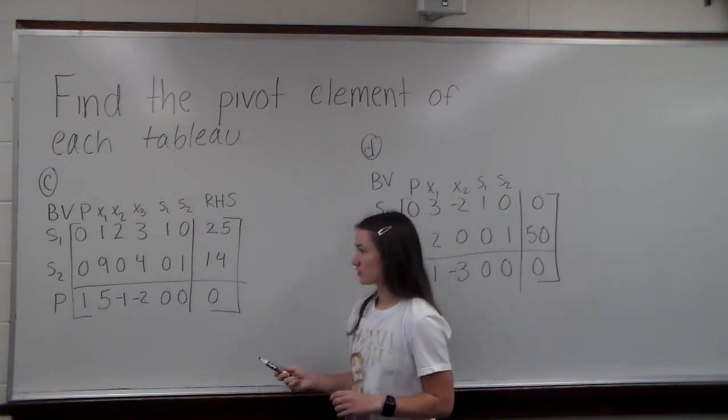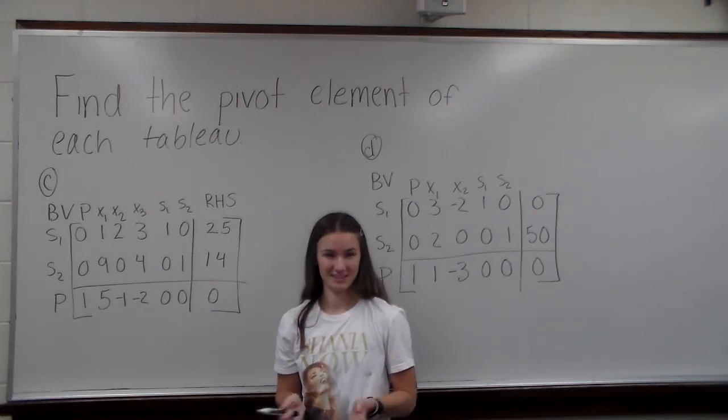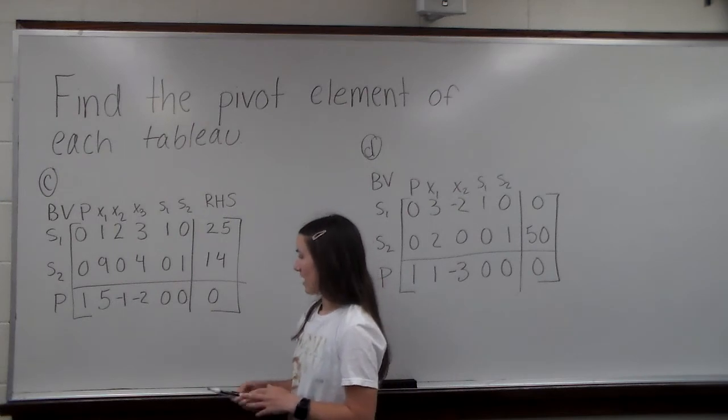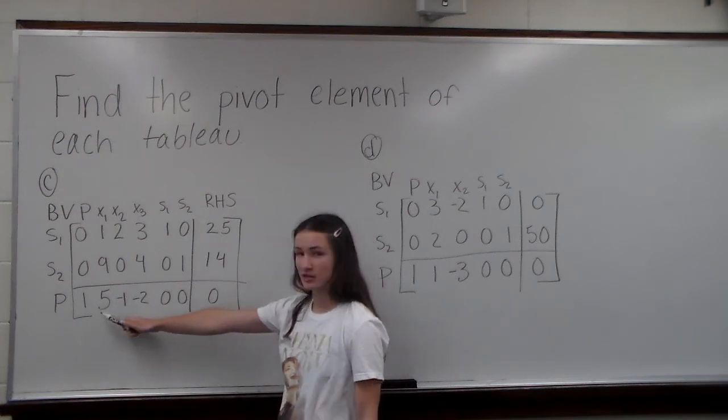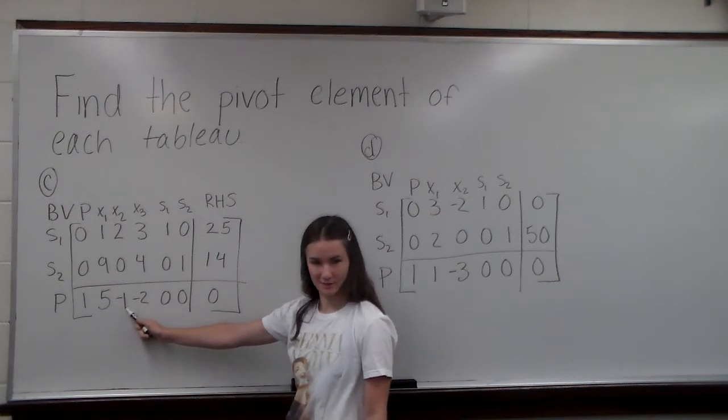For this first tableau, as we can remember from our three steps in the notes, we would have to, in the objective row here, go until we find our first negative number.